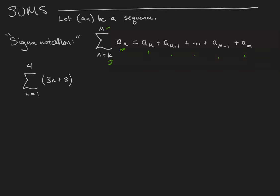So let's see it in action. We have the sum from 1 to 4 of the sequence 3n plus 8. If we plug a 1 in for n, we get 3 times 1 plus 8 makes 11.